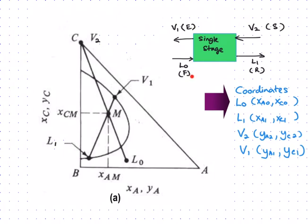This is how you label your coordinates for the feed L0. Since this is only a two-dimension graph, you need to have points which consist of A and only C because you have mass fraction of A, or your solute, at the horizontal axis, and mass fraction of your solvent, or C, at the y-axis.